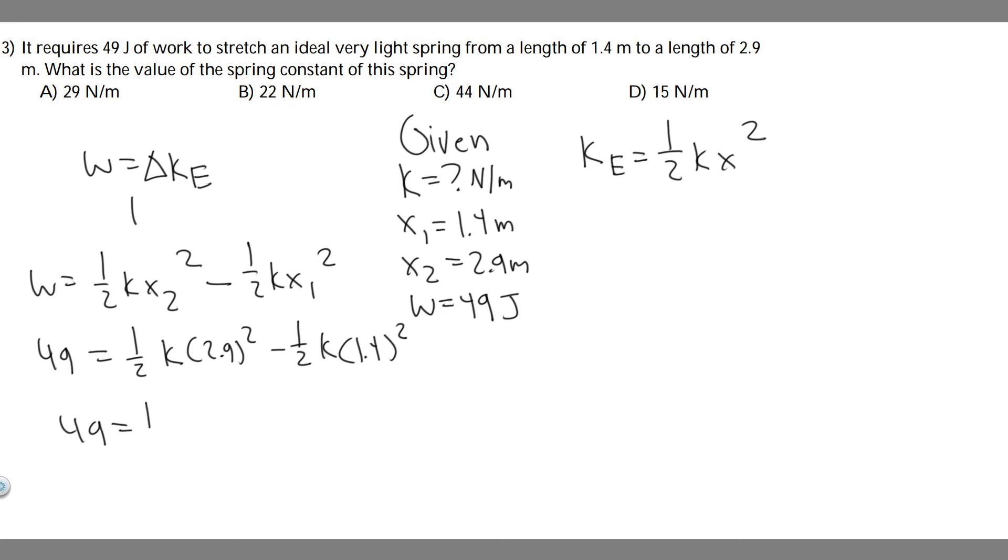So what you can do is factor out the 1/2 k. So 1/2 k and then you're going to get 2.9 squared minus 1.4 squared.